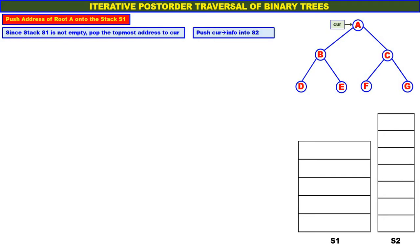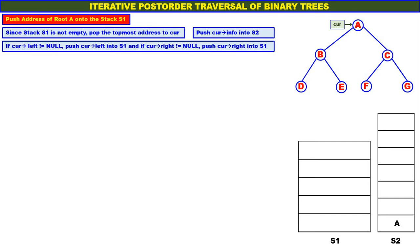Push CUR info into S2, so A is pushed onto S2. CUR left is not equal to null — it is B — therefore address of node B is pushed onto stack S1. CUR right is not equal to null — it is address of node C — that is also pushed onto stack S1.